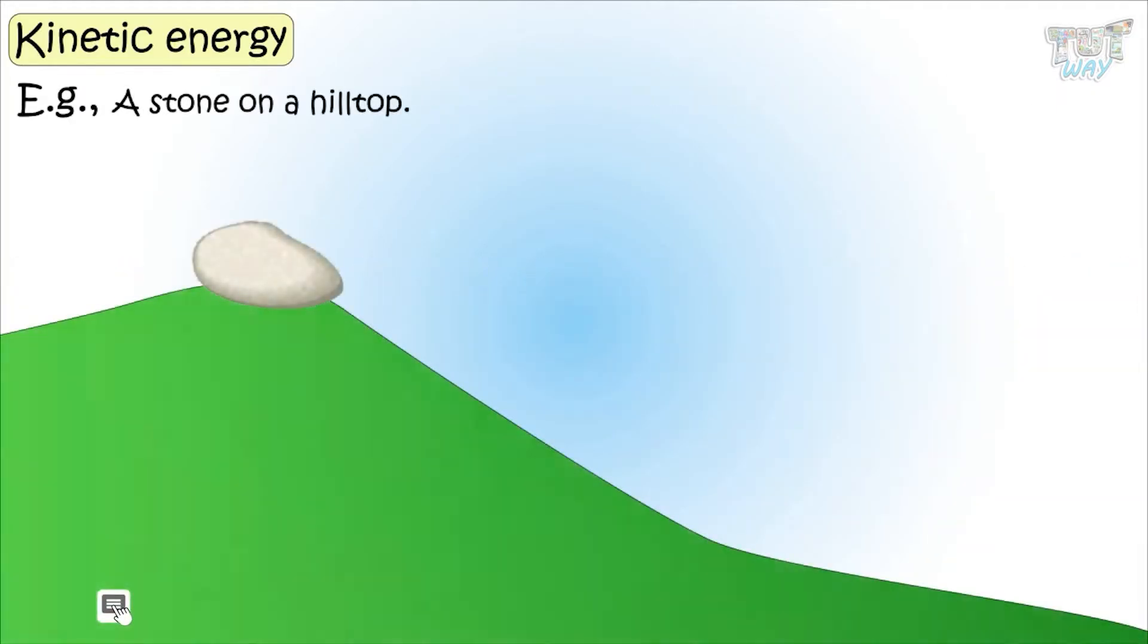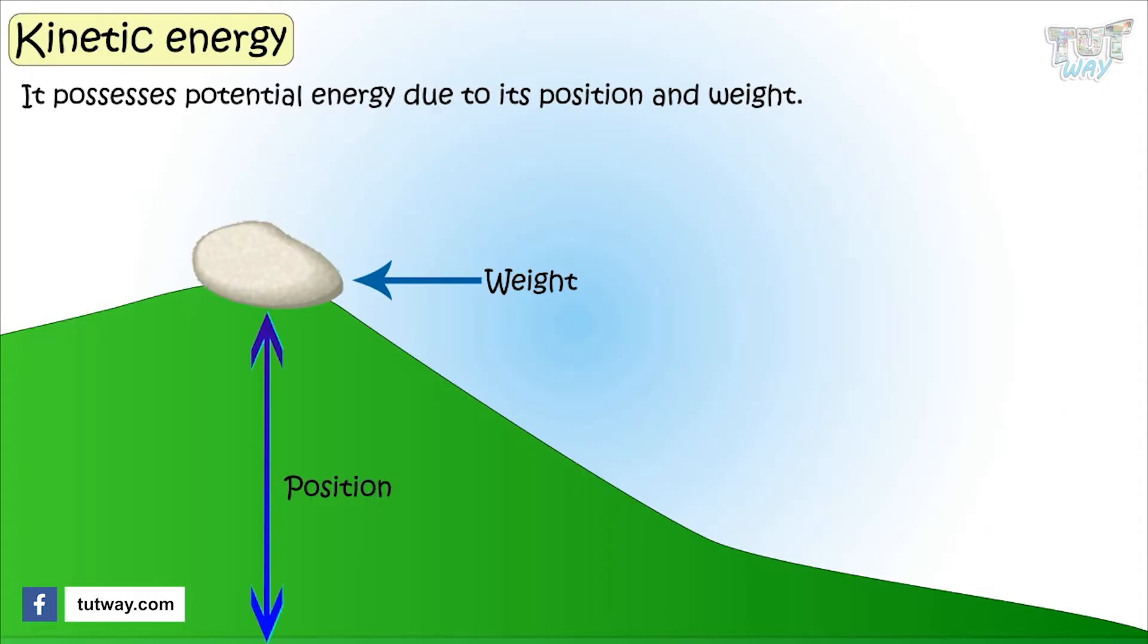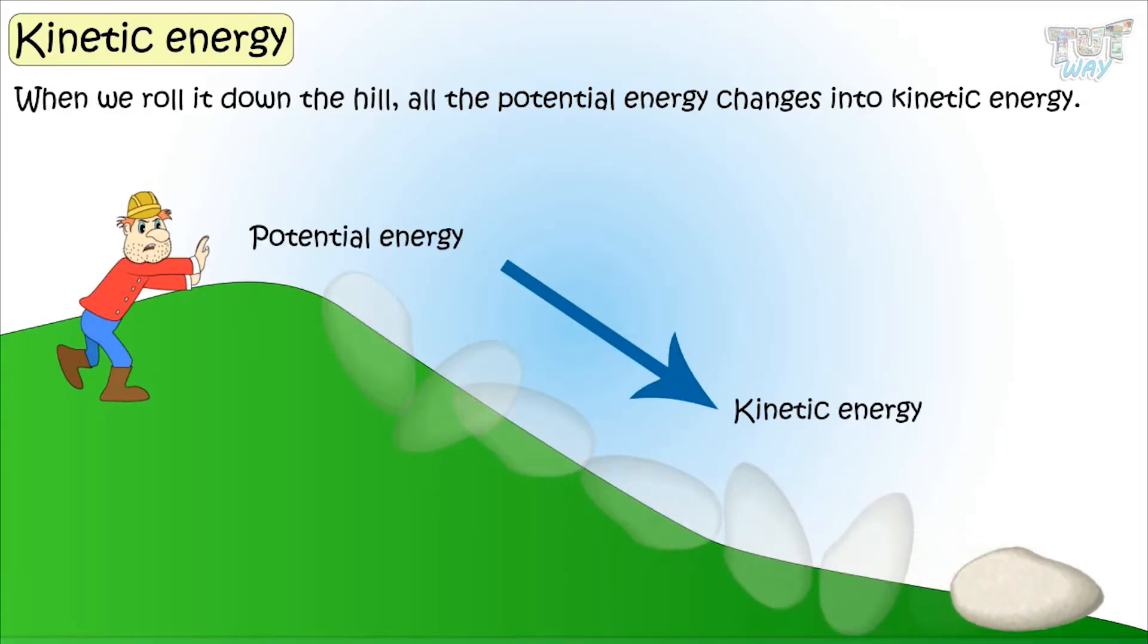Here is a stone on a hilltop. What kind of energy does it possess? It possesses potential energy due to its position and weight. Its position is much above the ground level and it also has a lot of weight. When we roll it down the hill, all the potential energy will change into kinetic energy, that is, its motion. So the fast-moving stone has kinetic energy.